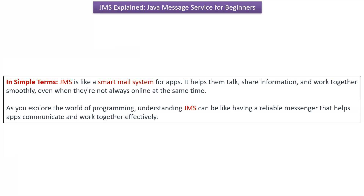In simple terms, JMS is like a smart mail system for apps. JMS helps them to talk, share information, and work together smoothly, even when they are not always online at the same time. As we explore the world of programming, understanding JMS can be like having a reliable messenger that helps apps to communicate and work together effectively.